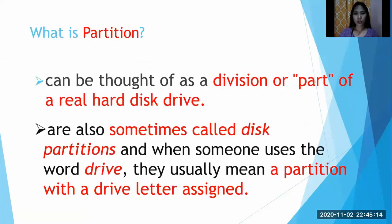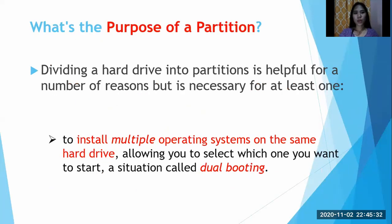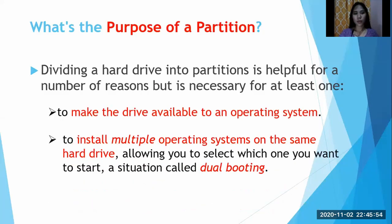Hard drive partitioning: what is a partition? A partition can be thought of as a division or part of a real hard disk drive. These are also sometimes called disk partitions, and when someone uses the word 'drive,' they usually mean a partition with a drive letter assigned. The purpose of partitioning includes installing multiple operating systems on the same hard drive — allowing you to select which one to start, a situation called dual booting — or to make the drive available to an operating system.